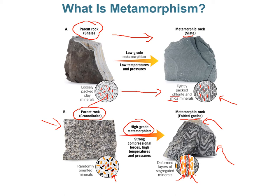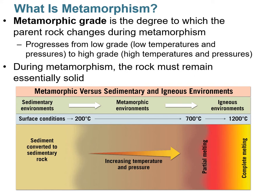Metamorphic grade is the degree to which a rock has metamorphosed. There are differing degrees: low-grade metamorphism involves low temperatures and pressures, and that can progress to high-grade metamorphism, which involves high temperatures and pressures. During metamorphism, the rock must remain solid — once melting is involved, you're back into an igneous environment.